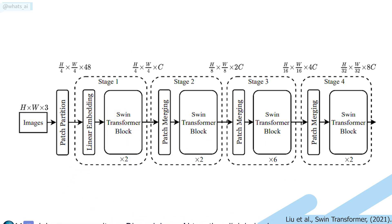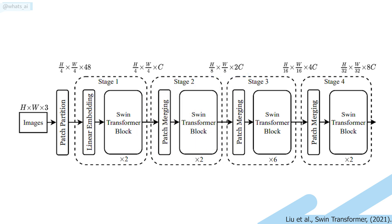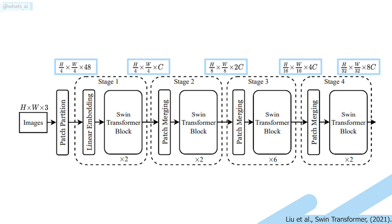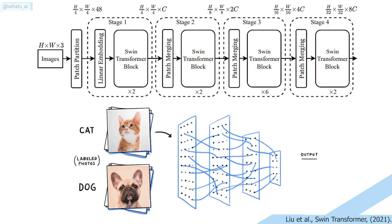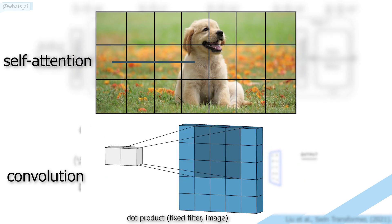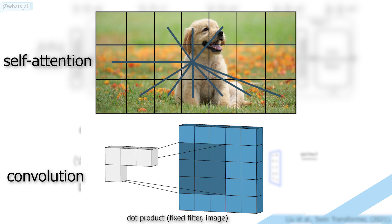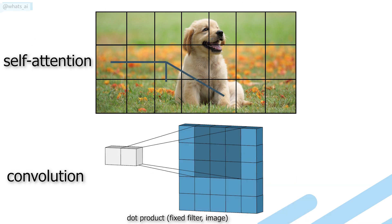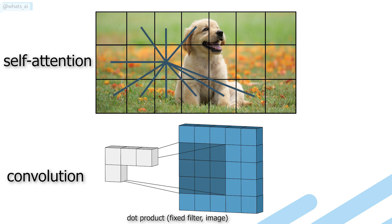That was only the first stage. The second stage is very similar but concatenates the features of each group of 2x2 neighboring patches, downsampling the resolution by a factor of 2. This procedure is repeated in stages 3 and 4, producing the same feature map resolutions as typical convolutional neural networks like ResNets and VGG. The key difference from convolutions is that in self-attention the weights are not fixed globally — they rely on the local context itself, so self-attention takes into account each pixel but also its relation to the other pixels.